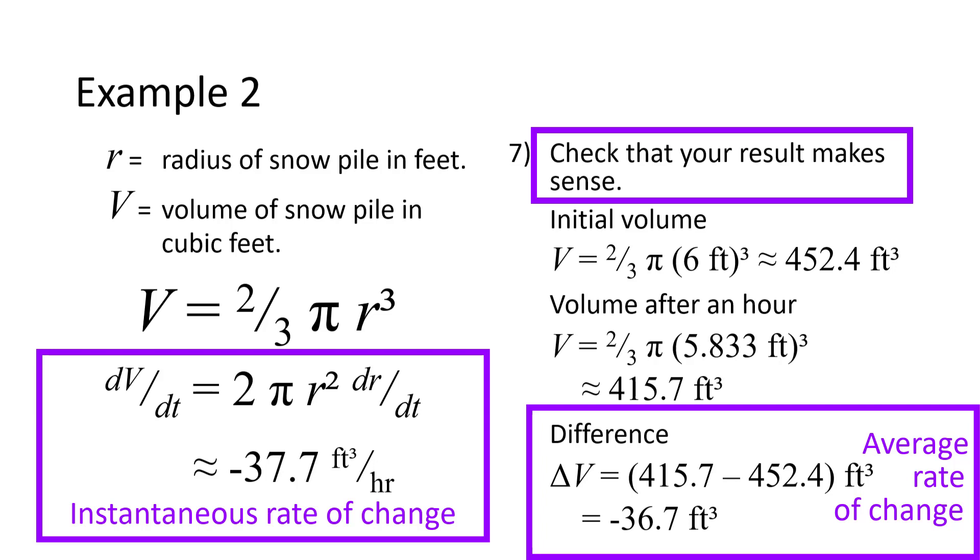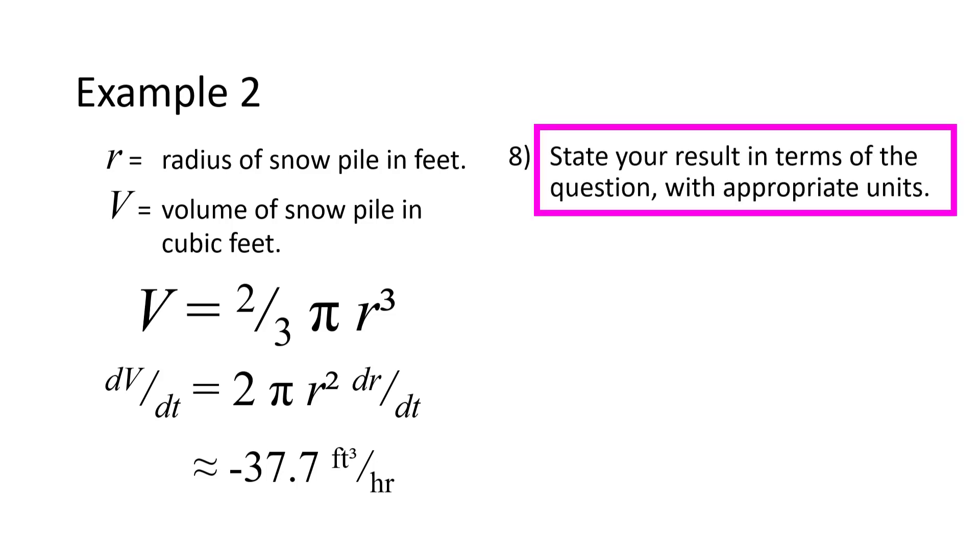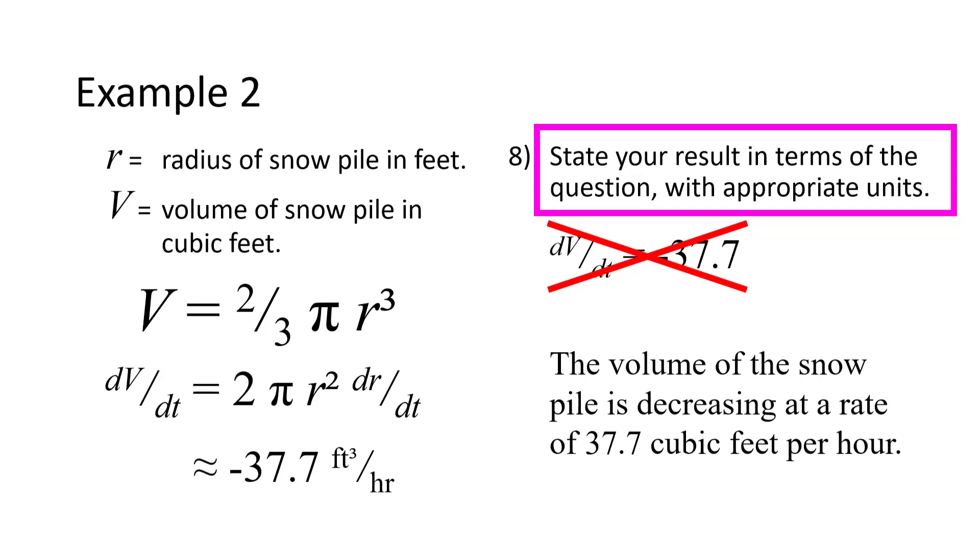The last step is to state the results in terms of the question, with units. If the question had been, what is the value of dV/dt, then dV/dt equals negative 37.7 would be a fine answer. But it wasn't. The question was, how fast is the volume decreasing? So, that is the question we answer. We write, the volume of the snow pile is decreasing at a rate of 37.7 cubic feet per hour. Now we are finished.